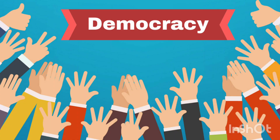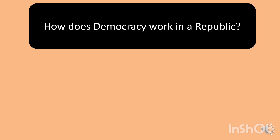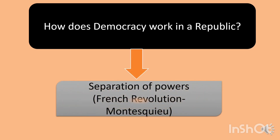Hi everybody. Today we are going to deal with the characteristics of democracy in the modern world — that is to say, how does democracy work in a republic? What we have to know is that democracy works with separation of powers. This is one of the issues introduced by Montesquieu in the French Revolution. It was not the intention of Montesquieu to introduce democracy, because he was not a democrat — he was an aristocrat. But the idea of Montesquieu was completely different from the idea of the separation of powers, which is one of the main characteristics of modern democracy.